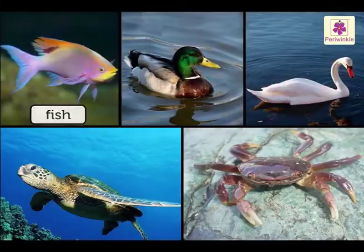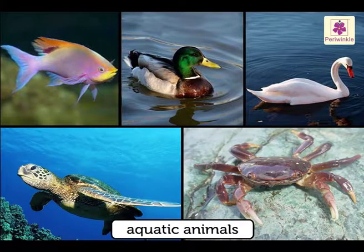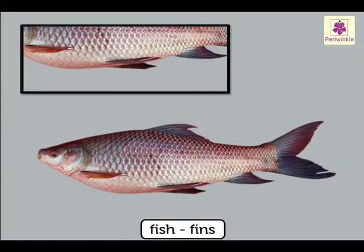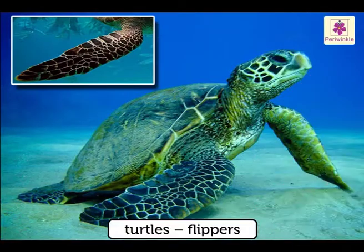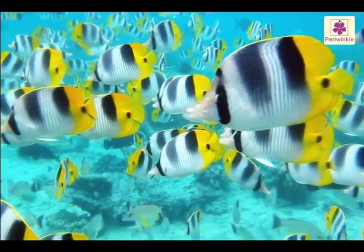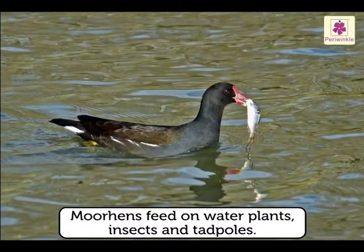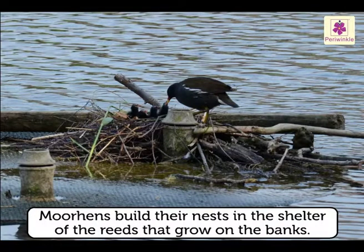Fish, ducks, swans, turtles and crabs live in water. They are called aquatic animals. They have gills through which they breathe. Fish have fins to swim in water. Ducks have webbed feet. Turtles have flippers to swim. Fish can only live in habitats formed by water. They feed on the plants and other water creatures. Moorhens feed on water plants, insects and tadpoles. They build their nests in the shelter of the reeds that grow on the banks.